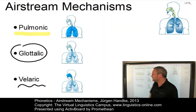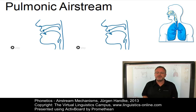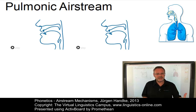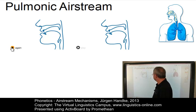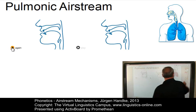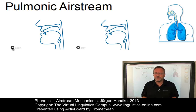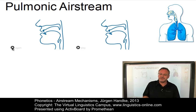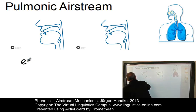Let us look at the pulmonic airstream first. Air coming out of the lungs is the source of power in nearly all speech sounds. This airstream is referred to as pulmonic, that is, as a lung-based airstream. In speech, the air is normally forced out. This forcing out of air is caused by a downward movement of the ribcage and/or an upward movement of the diaphragm. These two movements are the initiators of what is referred to as a pulmonic egressive airstream.